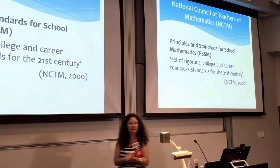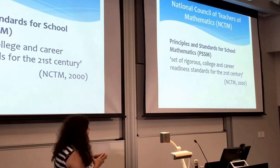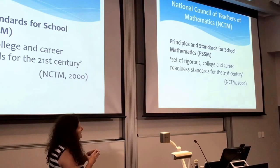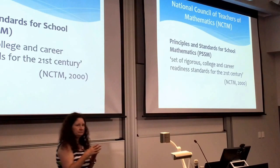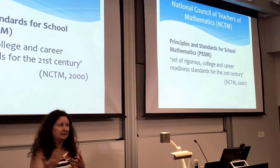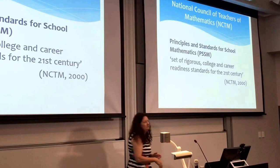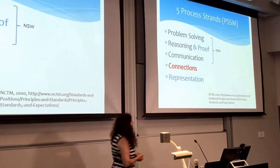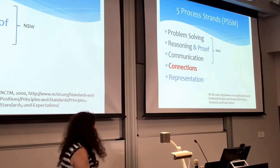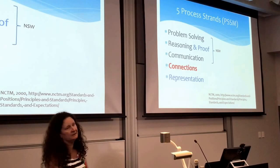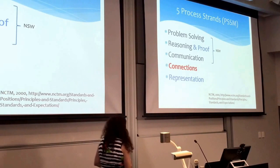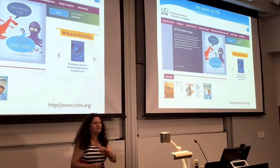The National Council of Teachers of Mathematics — NCTM — that's the North American Maths Association, came up in 2000 with some principles and standards for school mathematics. That included ten standards: five relate to content strands and the other five relate to working mathematically. These are guidelines that helped to inform the Common Core Standards. One of their five process strands was connections, and I thought it was really interesting that they saw it as such a core idea that they made it one of their working mathematically processes.